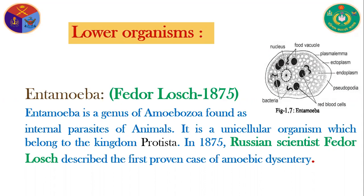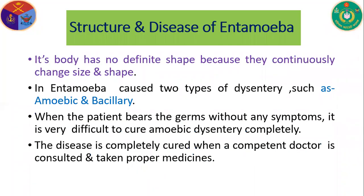Our topic is Entamoeba. Entamoeba is a genus of amoeba found as internal parasites of animals. It is a unicellular organism belonging to the kingdom Protista. In 1875, Russian scientist Fedor Losch described the first proven case of amoeba dysentery.